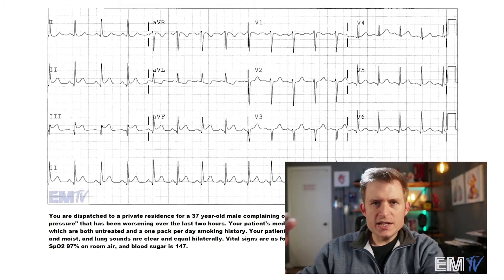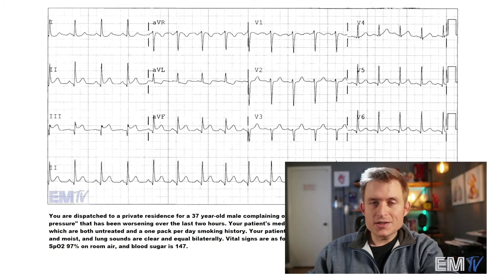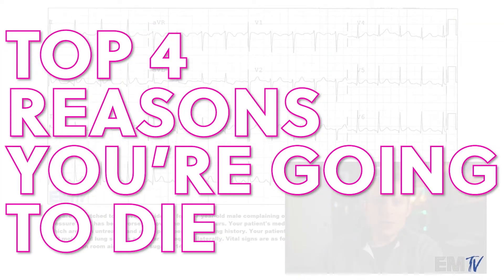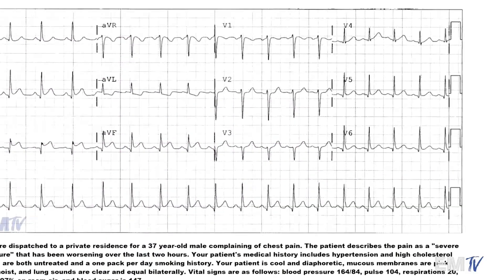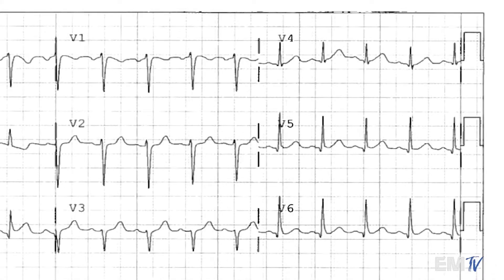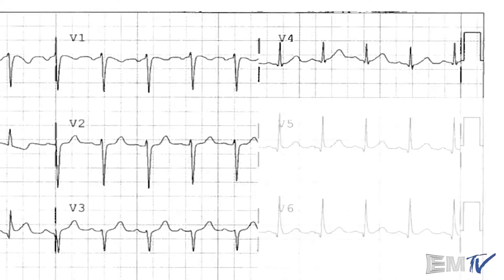The way I teach this is like an internet listicle: V1 through V4, the top four reasons your patient is going to die today — because again, this involves the widowmaker. Now V5 and V6 are lateral leads, so we'll go ahead and lock those out for a second. What I'm looking for here is ST segment elevation.